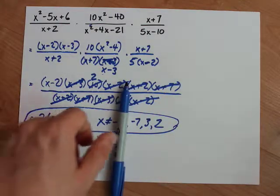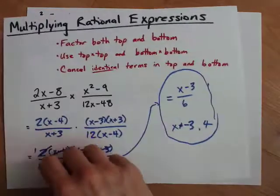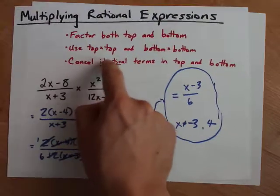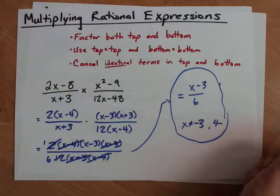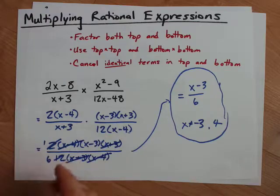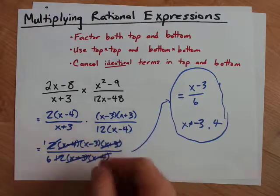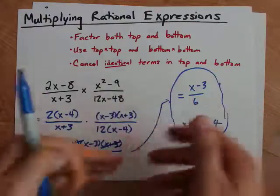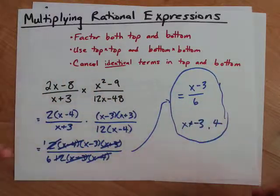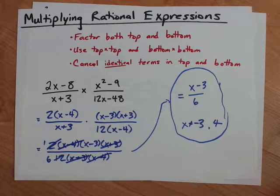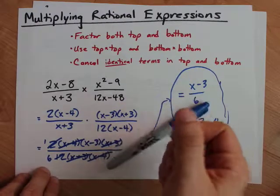But don't forget to multiply. All you've got to do is factor everything. Use top times top and bottom times bottom. Then you can cancel one of each of the factors, or as many as possible, but only one at a time, just so you don't get lost. Don't forget to state your restrictions in the end as well.